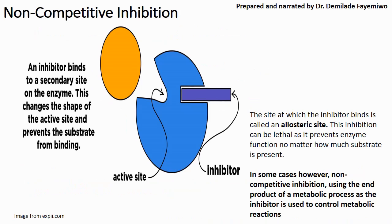You can also have non-competitive inhibition. Non-competitive inhibition simply means that the inhibitor does not bind in the active site of the enzyme. Rather, it binds at a different site called an allosteric site. When it binds at that site, it changes the shape of the active site of the enzyme and prevents the substrate from being able to bind. You can see in the image here that the inhibitor is bound to the enzyme at a different site from the active site.